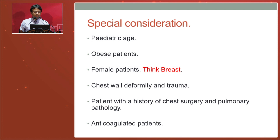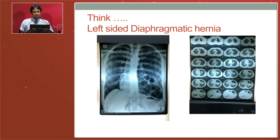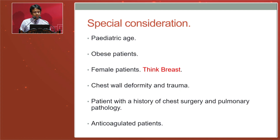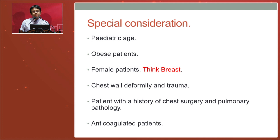Special considerations include pediatric patients, obese patients, and female patients — always think about the breast when placing an IC drain. Chest wall deformity and trauma with flail segments require careful thought about altered anatomy, as the flail segment may be displaced inward preventing easy drain insertion, and you risk damaging intrathoracic structures. In patients with a history of chest surgery or pulmonary pathology, significant adhesions may cause the drain to enter lung parenchyma. Following pneumonectomy where the lung has been removed, do not put an IC tube into the pneumonectomy cavity.